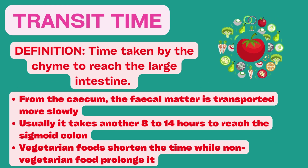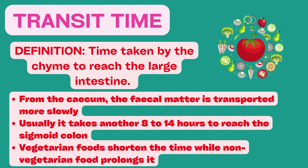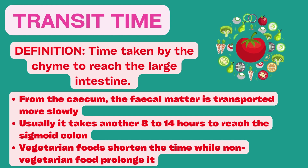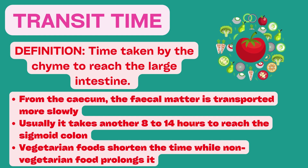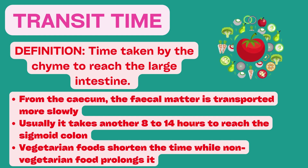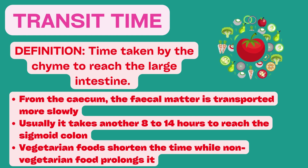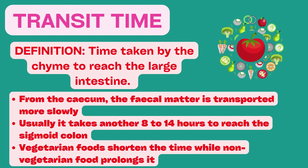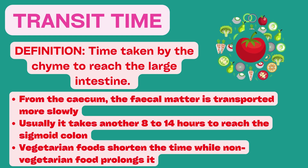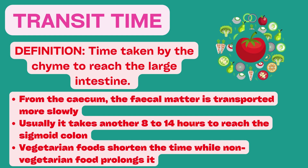The next important thing to consider is transit time — the time taken by food, in this case chyme, to reach the large intestine. Most of the chyme reaches the cecum within 8-9 hours of food intake. From the cecum, the fecal matter is transported more slowly, usually taking another 8-14 hours to reach the sigmoid colon. Vegetarian foods shorten the transit time while non-vegetarian food prolongs it.